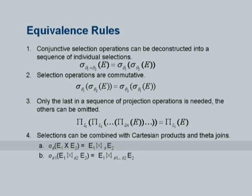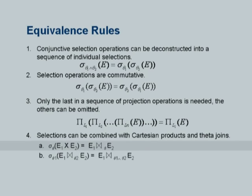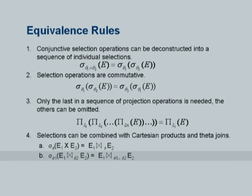Rule 4a says that a selection on a Cartesian product is really the same as a join. Here, select on E1 cross product E2 is the same as E1 join theta E2 where theta came from the selection. This is a very important rule. The original SQL query really had a cross product of all the relations in the from clause. If I have a selection on a cross product I can push it in and turn it into a join condition — I do not need to evaluate the cross product first and then apply the selection. I can evaluate the join with this condition instead, and that is a lot more efficient. Rule 4a is a very very important rule for any optimizer.